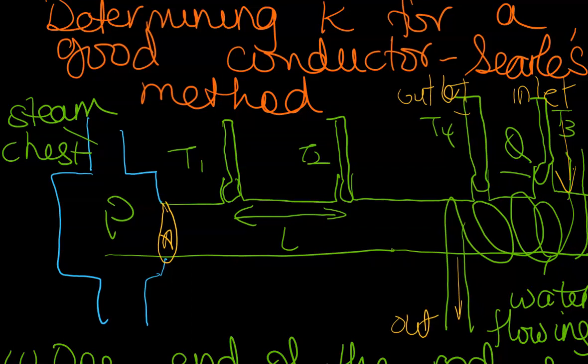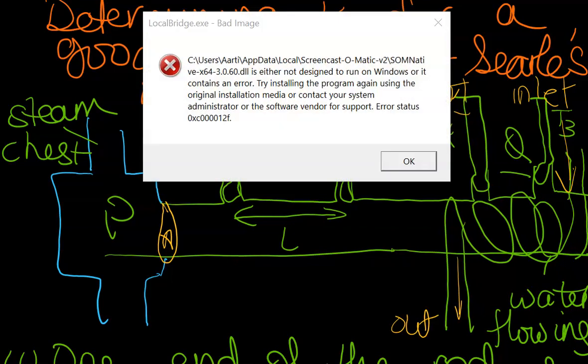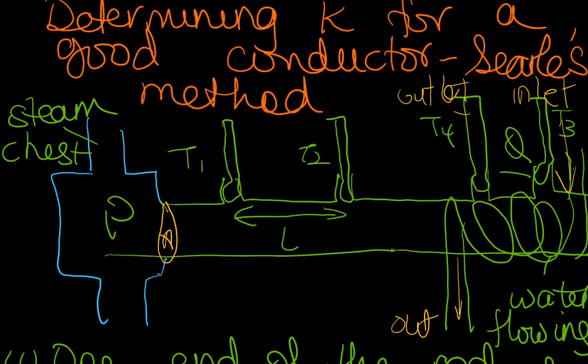So what happens at Q is that you want to have the water absorbing and getting rid of the heat that has been conducted along the rod. So obviously you have water flowing in at T3 and water flowing out at T4. So when that happens, you are maintaining a constant temperature difference between P and Q.